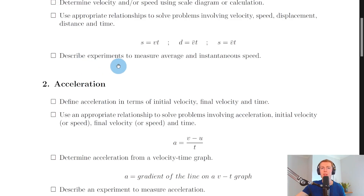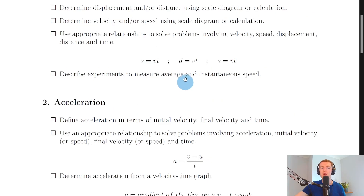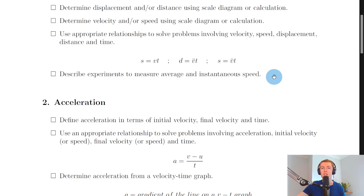Lastly for section one, you need to be able to describe experiments to measure average and instantaneous speed. To measure average speed of a moving trolley on a ramp, the trolley has a card or mask and you set up two light gates connected to a timer. You let the card pass through both light gates and, knowing the distance between the two light gates and the time taken, calculate average speed using distance divided by time. For instantaneous speed, you use one light gate instead of two and measure the time taken for the card to cut through the light gate. Instantaneous speed equals the width of the card divided by the time (v = d/t).